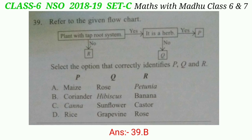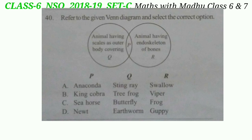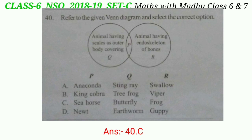Question 40: Refer to the given Venn diagram and select the correct option. P could be animals having scales as outer body covering and also having an endoskeleton of bones. Q will be animals having scales as outer body covering only. R will be animals having an endoskeleton of bones only. The correct answer is option C — P will be seahorse, Q will be butterfly, and R will be frog.